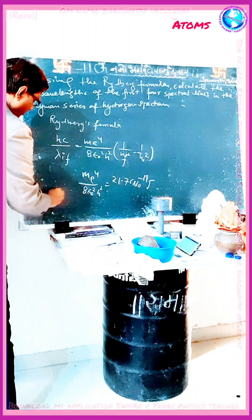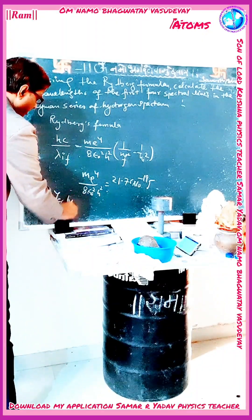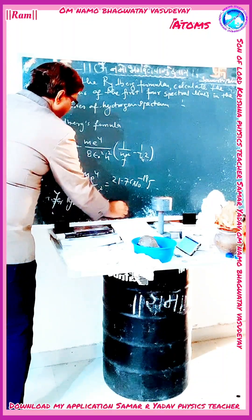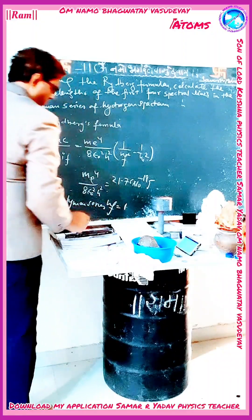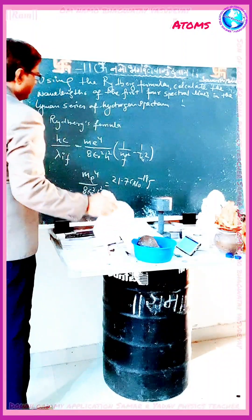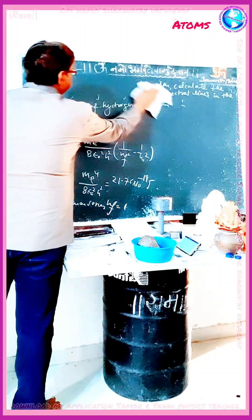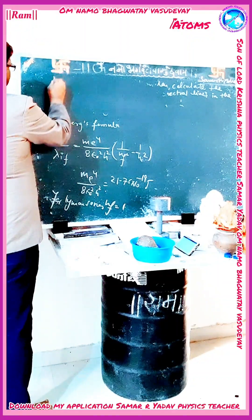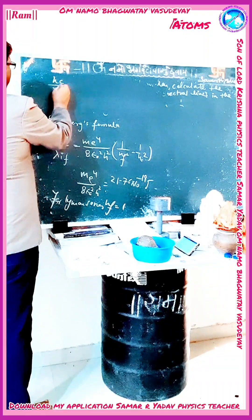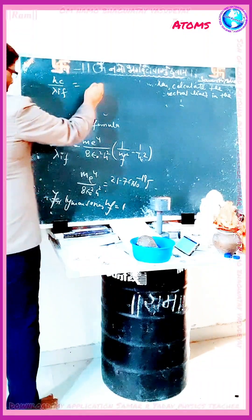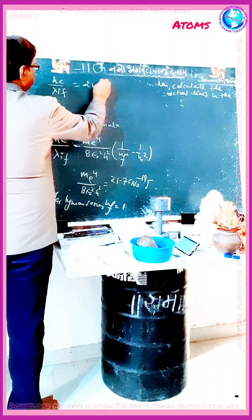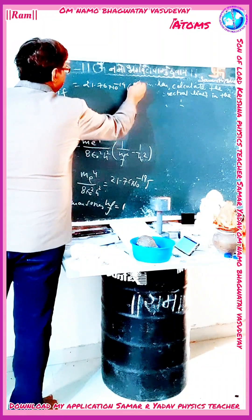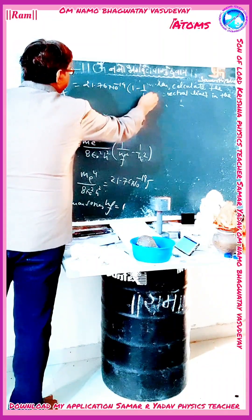Now for the Lyman series, n_f is equal to 1. So keeping the value here, hc upon λ_if is equal to 21.76 × 10⁻¹⁹ into (1 minus 1 upon n_i²).